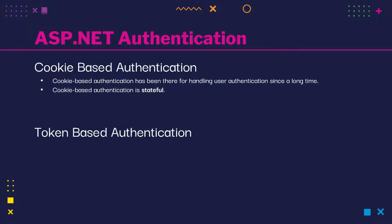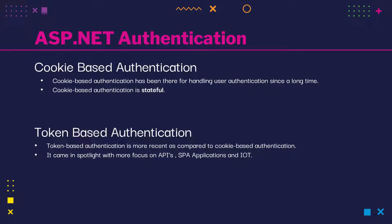Token based authentication, on the other hand, has gained prevalence over the last few years with the rise of single page applications, web APIs, and the Internet of Things. When we talk about authentication with tokens, we generally talk about authentication using JWT, which stands for JSON web tokens. In the case of JWT, the server does not keep track of which users are logged in or which JWTs have been issued. Instead, each request to the server is accompanied with a token which the server uses to verify the authenticity of that request. Because of that, token based authentication is stateless.